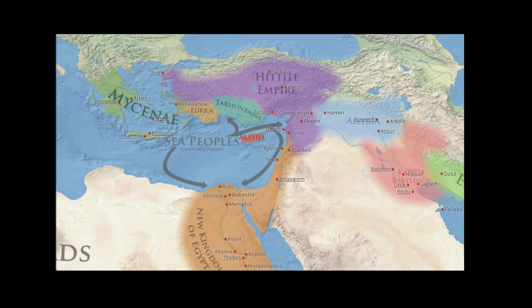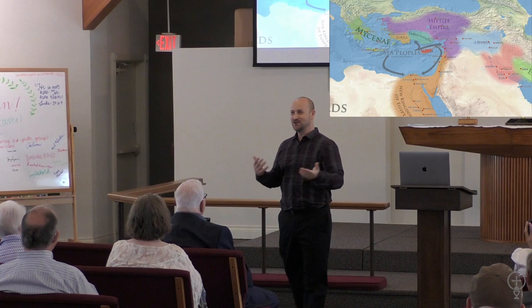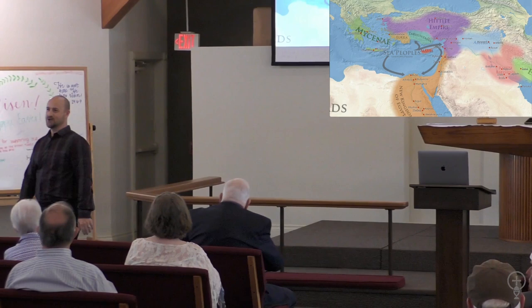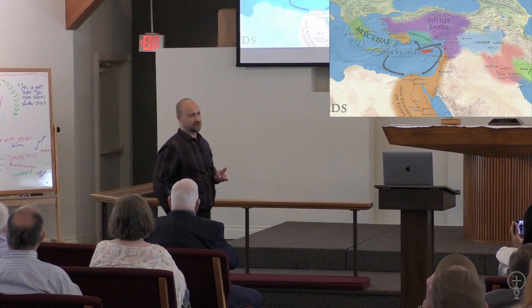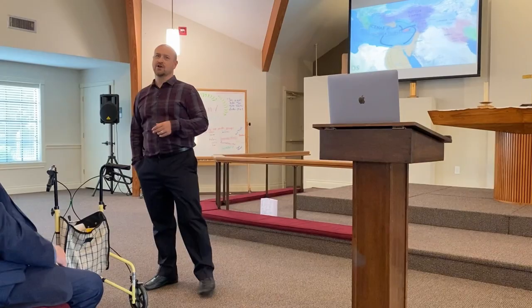Hittite is also the closest language to English of all these ancient languages. Here's a small sentence in Hittite: 'watar aquemi.' Any guesses? 'Watar' is water — you probably know 'agua' or 'aqua' from its Latin version — and 'aquemi' means 'I am drinking.' So: 'I am drinking water.' The word 'me' isn't too different from how we say it in English. The rest of Hittite is a little wild, but certain elements are very close to us.